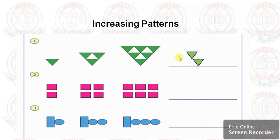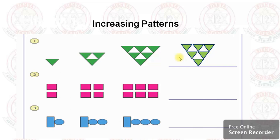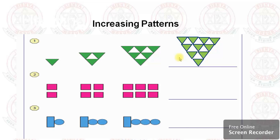So arranging: down one triangle, next is two triangles, next is three — the next will be four triangles. Since they are green, you have to draw them in green color only. Next, look at the rectangles.